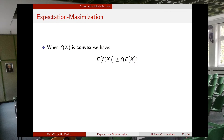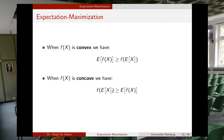If the function is concave, the direction of the inequality reverses: the evaluation of F at the expected value of X will be larger than or equal to the expected value of F. We simply change the direction of the inequality for concave functions. This is the case we will use, because we will apply Jensen's inequality to the logarithm function, which is a concave function.